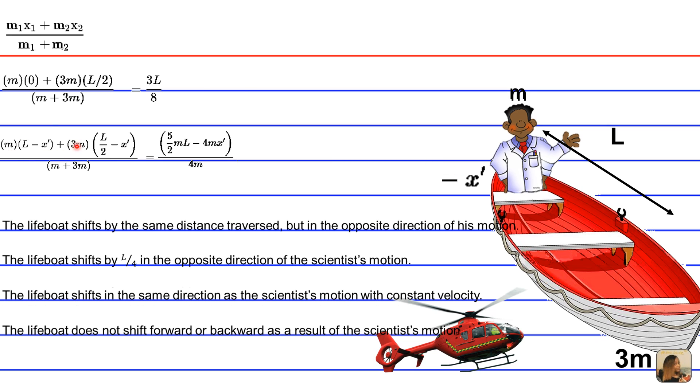And now we're doing that relative to the boat. The boat's mass is 3m. That remains the same. And we're considering its center. So L over 2 relative to the total distance traveled minus x prime. That's how much it shifts in the opposite direction.